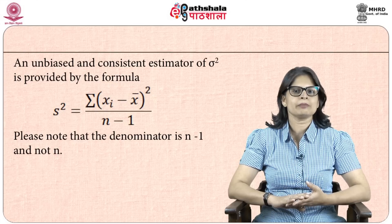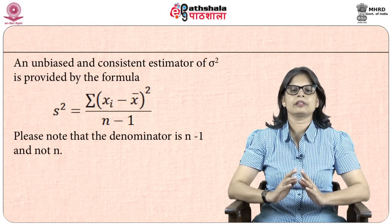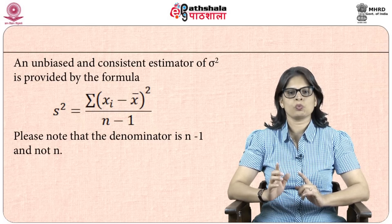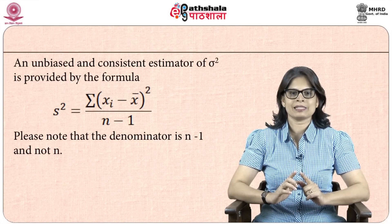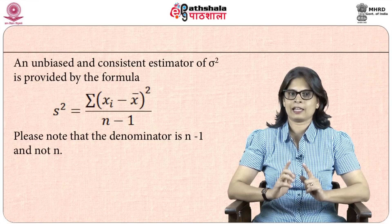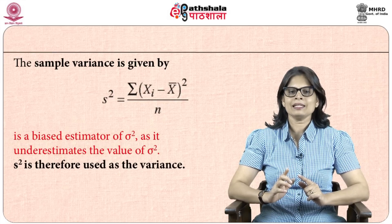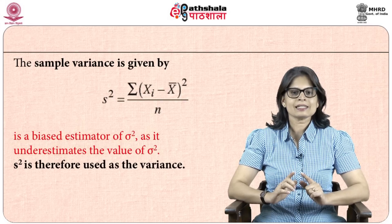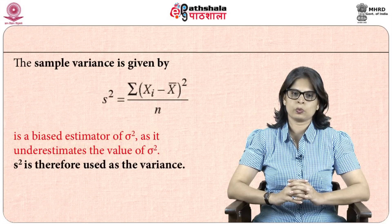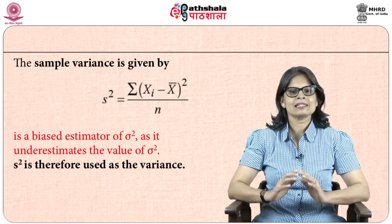An unbiased and consistent estimator of sigma-squared is provided by the sample variance formula: s-squared equals summation of (xi minus x-bar) squared divided by small n minus 1. Note that the denominator here is n minus 1 and not n itself. Using small n in the denominator gives a biased estimator of sigma-squared as it underestimates sigma-squared, so we prefer to use n minus 1.